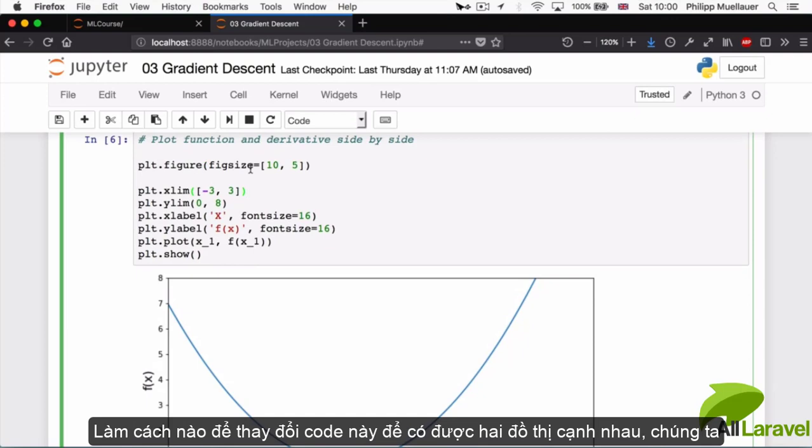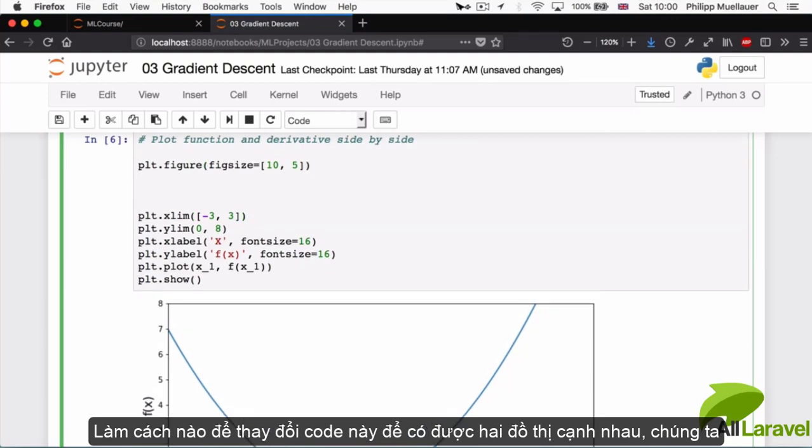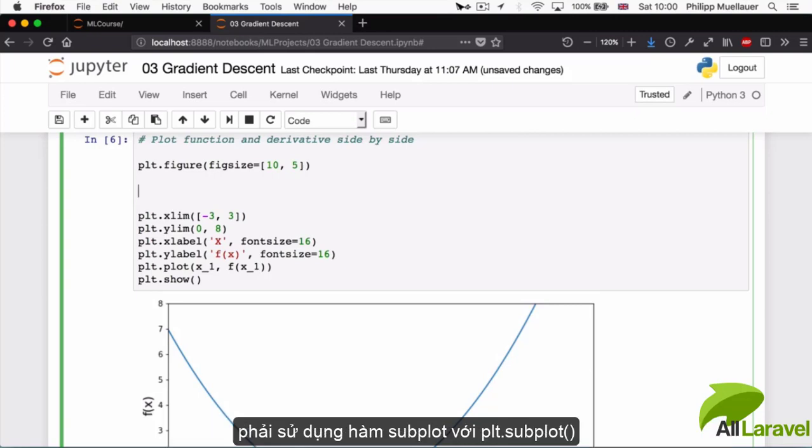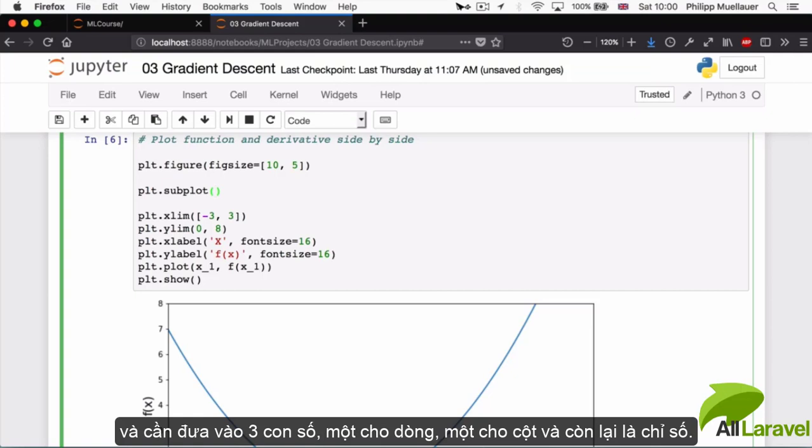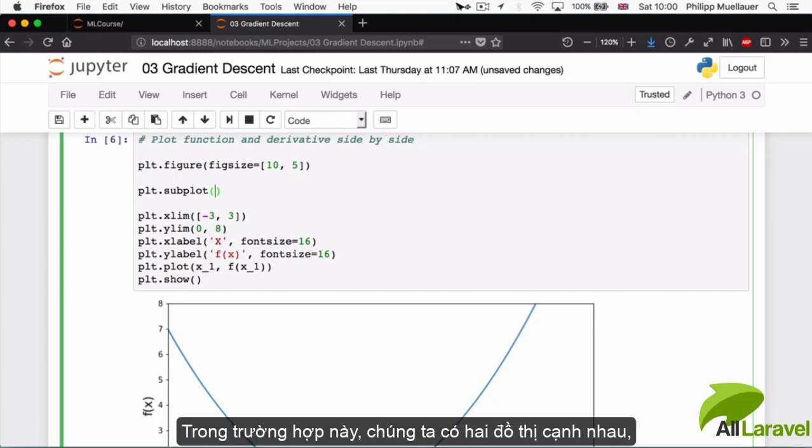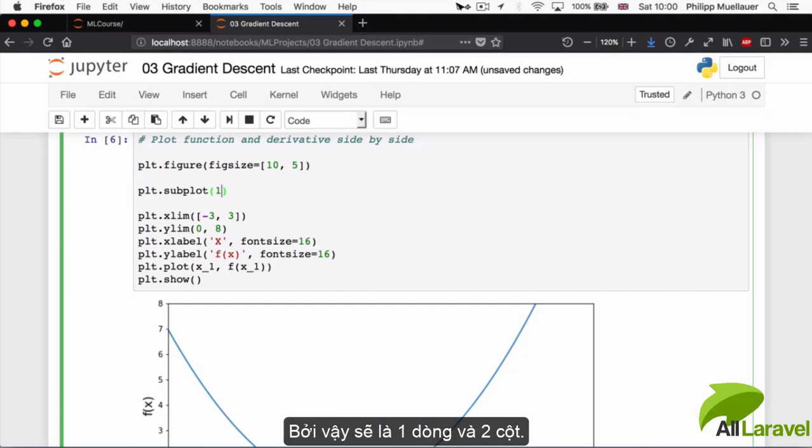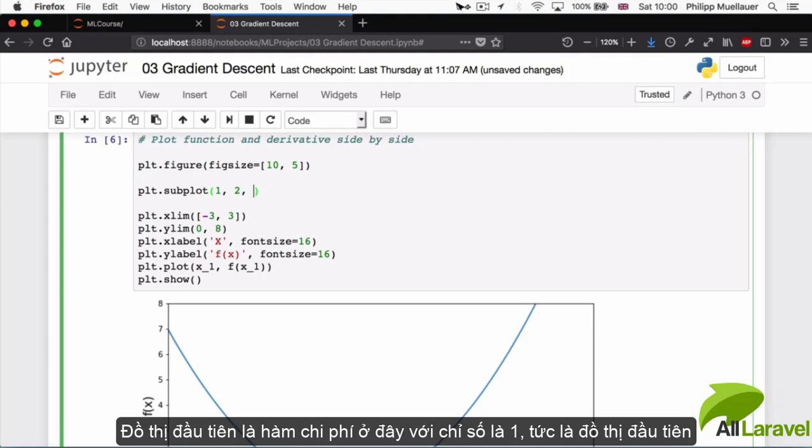Now I'm going to modify this code a little bit more. So in order to have two plots side by side, we're going to have to use this subplot functionality from matplotlib. So I'm going to use plt subplot, and then I have to specify three numbers, a row, a column, and an index. So in this case, I'm going to have two plots side by side. So they're going to be in the same row. So one row, it's going to be two columns, and the first plot, this cost function here is going to be at index one, it's going to be my first plot.